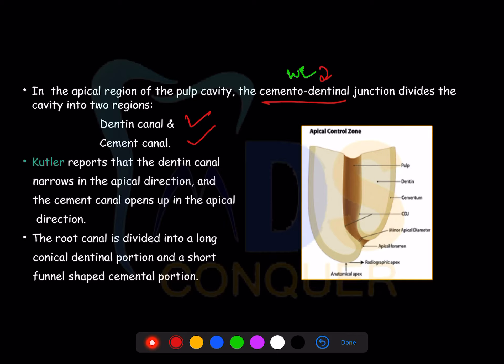The dentinal canal is very narrow in the apical area, while the cemental canal opens in that direction. These are indirectly related to the major and minor constriction. When observed in cross-section under a microscope, this appears as a morning glory flower appearance — or simply a funnel shape.